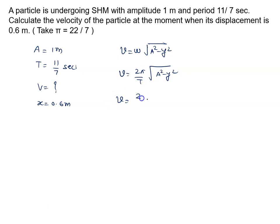2 pi ke jagah hum log rakhenge 22 by 7, upon T ke jagah rakhenge 11 by 7, root a square a square ke jagah 1 square minus 0.6 square.